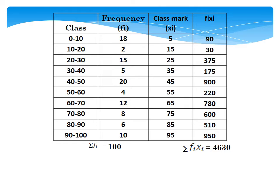The second class is 10 to 20, so the average of 10 and 20 is 30 divided by 2, which equals 15. The third class is 20 to 30: the lower limit is 20 and the upper limit is 30, so 20 + 30 = 50, divided by 2 equals 25. Similarly, we can find the class mark for all the classes and complete the third column.